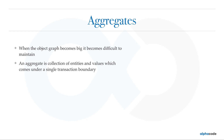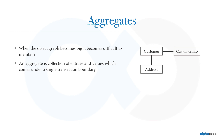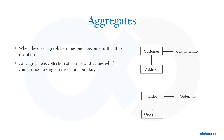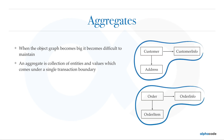Suppose you have a customer with some customer information and some address. If some customer info is changed, you might want to change the customer object itself. And suppose you have an order with order info and order items — if any of the order items change, you might want to change the status of the order or maybe the total amount of the order. All these have strict transactional boundaries and they have to be consistent all the time — an aggregate basically controls the change.